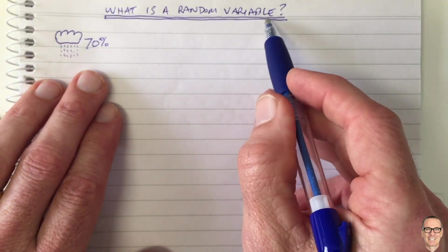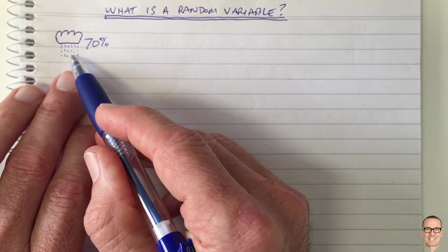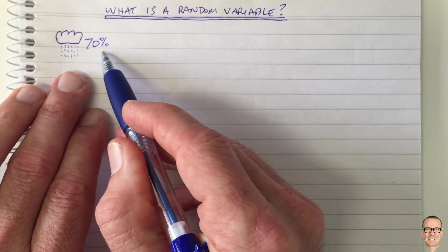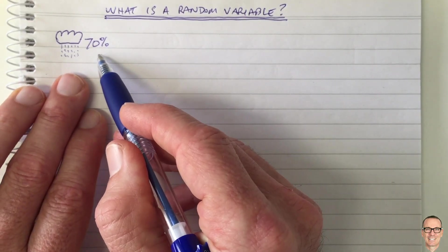So what is a random variable and what does it mean when your weather app tells you that there's a 70% chance of rain, for example?